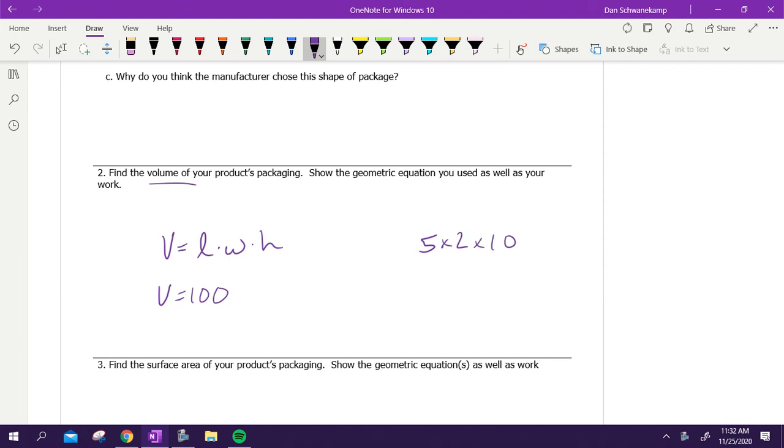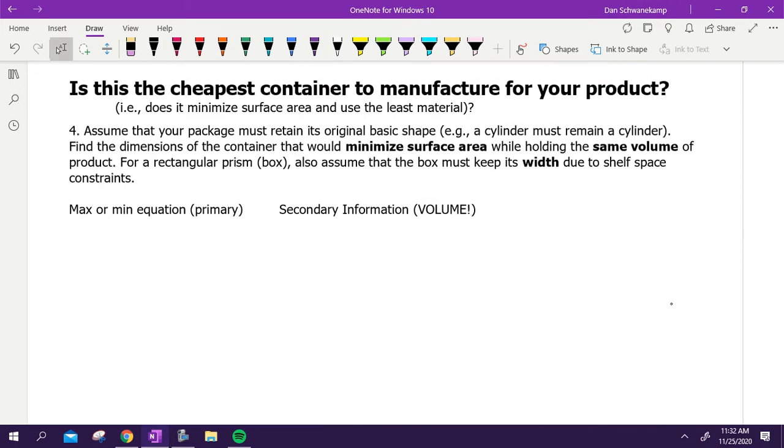Reading the back side, our job is to decide: is this the cheapest container to manufacture our product? We are going to keep the same basic shape and try to minimize surface area while holding the same volume of our product.